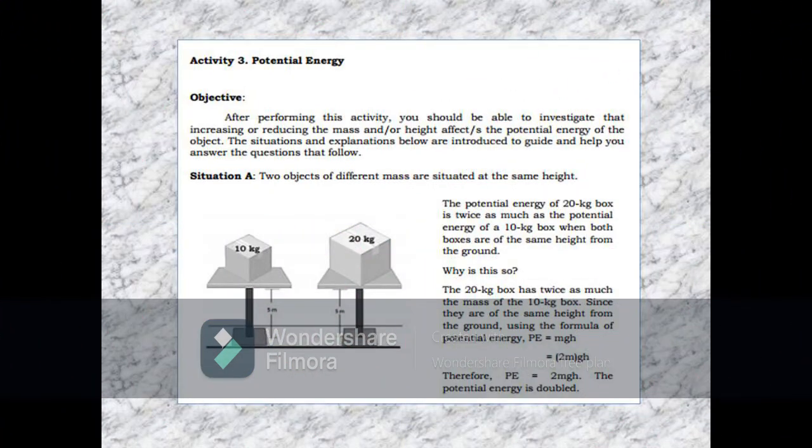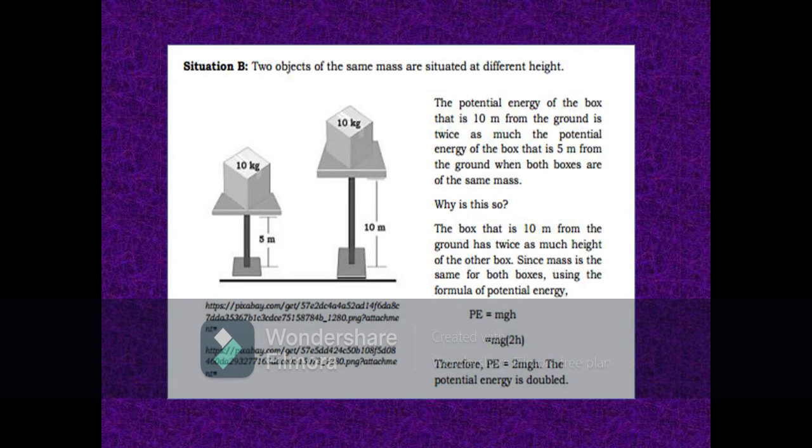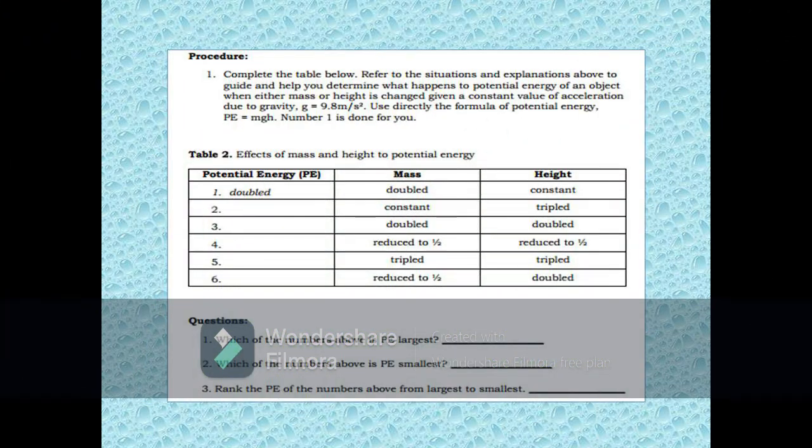The next activity under what's more in module 3 is activity 3, potential energy. The objective: after performing this activity, you should be able to investigate that increasing or reducing the mass and or height affects the potential energy of the object. The situation and explanation are introduced to guide and help you answer the questions that follows. There is also situation A, two objects of different mass are situated at the same height. Situation B, two objects of the same mass are situated at different height. There is also table, you need to complete table 2, effects of mass and height to potential energy and page 12. And questions 1, 2, and 3. For you able to answer those questions and complete the table, table 2, you should refer to situation A and B. Use directly the formula of potential energy in answering those questions.